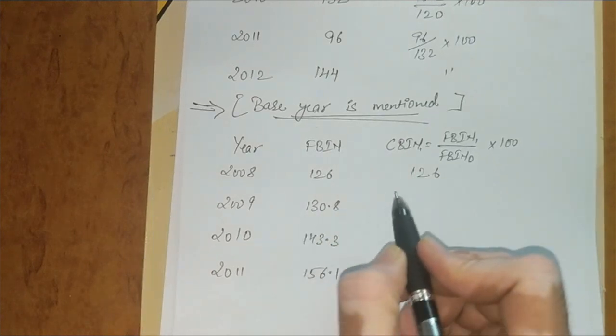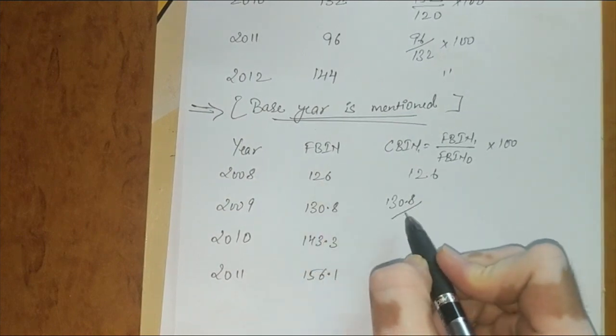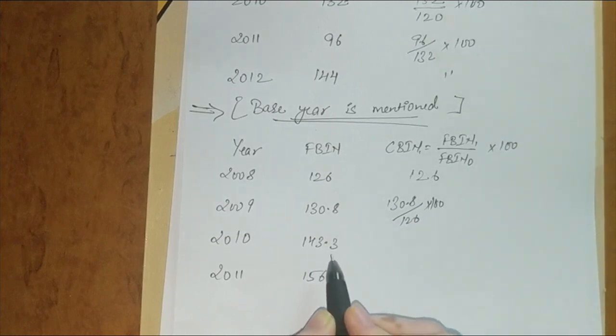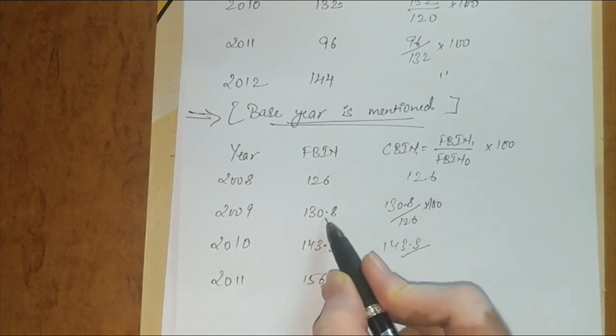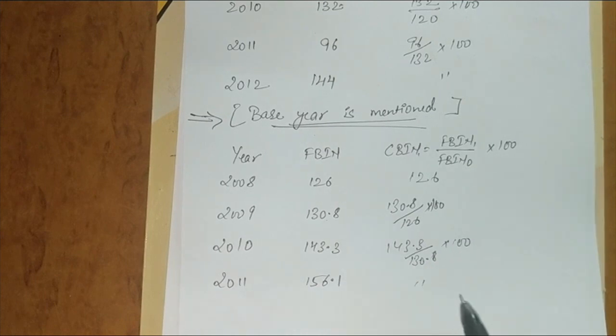Next, it's the same: 130.8 current year divided by previous year, which is 126, into 100. Third, 2010—what's given? 143.3 upon previous year, 130.8, into 100. OK.